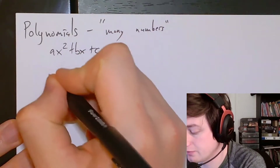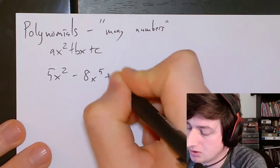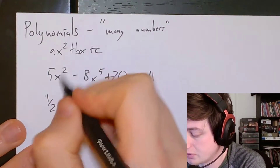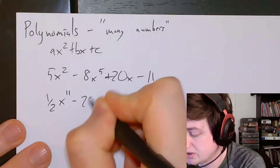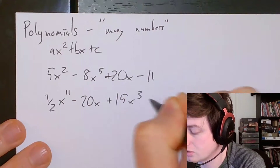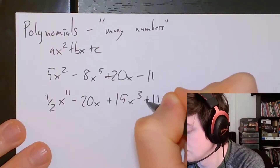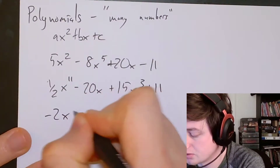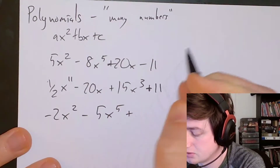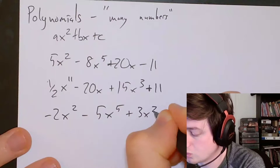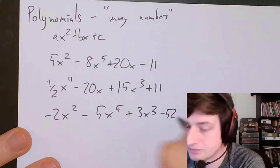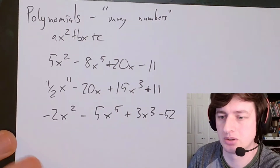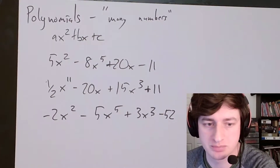Some examples of these things are like 5x squared minus 8x to the 5th plus 20x minus 11, or one-half x to the 11th minus 20x plus 15x cubed plus 11, or negative 2x squared minus 5x to the 5th plus 3x cubed minus 52. Those are all polynomials. They each have four terms. But you could have many terms, two terms, or a single term — they're all polynomials.